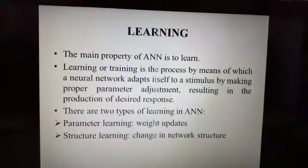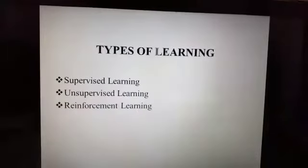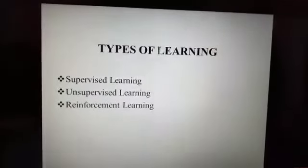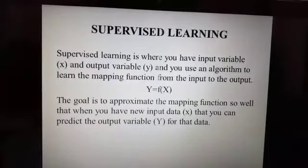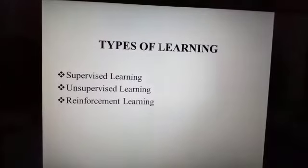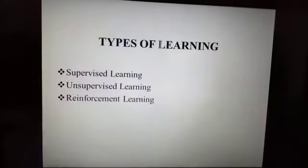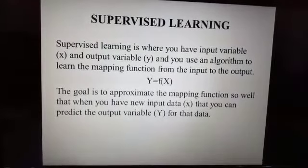These two types of learning can be performed simultaneously or separately. Apart from these two, artificial neural networks can be generally classified into three types: supervised learning, unsupervised learning, and reinforcement learning.